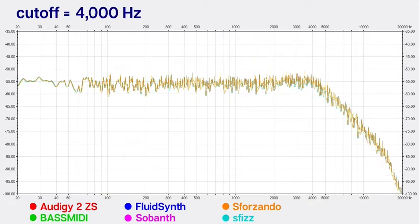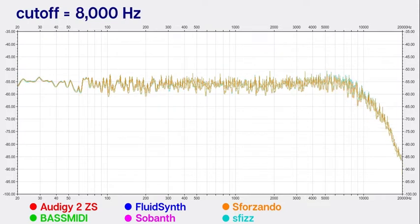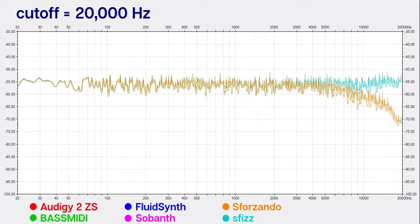We start getting closer to 20,000 Hertz. You'll notice Sforzando starts to sag at the high end a little bit. So you can see right now SFZ is brighter at the higher frequencies than Sforzando, and as we get all the way to 20,000 Hertz those high frequencies sag even more.